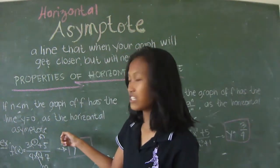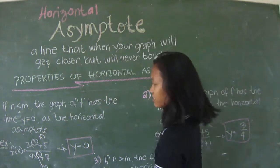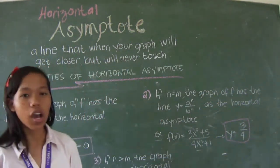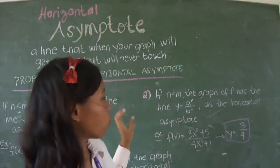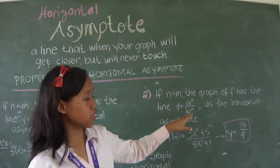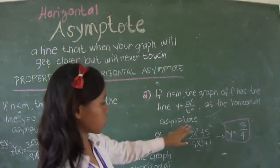This property has a horizontal asymptote. So number 2, if n equals m, the graph of f has the line y equals n to the power of m over b to the power of m as the horizontal asymptote.